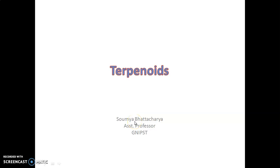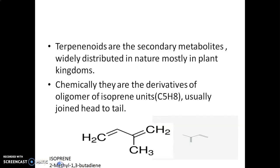Dear learners, today we will discuss about a broad group of secondary metabolites — terpenoids. Terpenoids are basically a secondary metabolite widely distributed in nature, mostly in the plant kingdom and also in the animal kingdom.